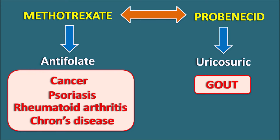Even though Methotrexate is not used for the treatment of gout, in gouty arthritis it can show some beneficial effects — it can decrease the inflammatory response and also decrease uric acid levels to a smaller extent. However, the interaction between these two drugs is not related to the actions of Methotrexate; the interaction is purely related to the action of Probenecid.